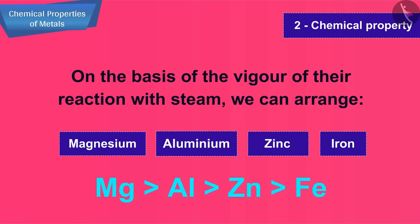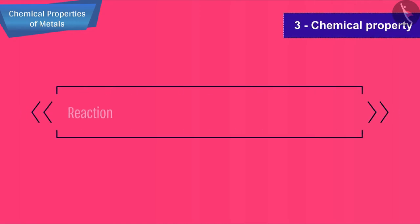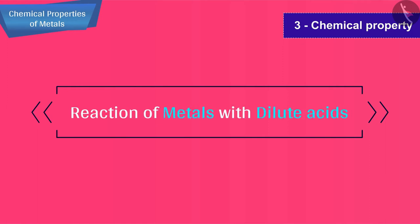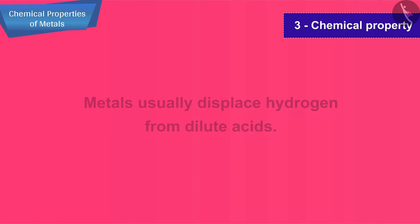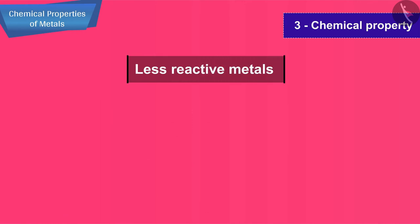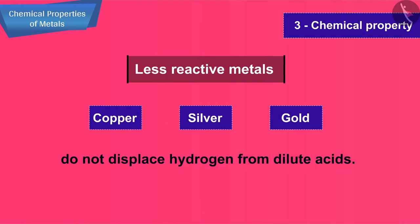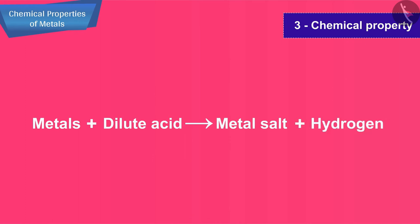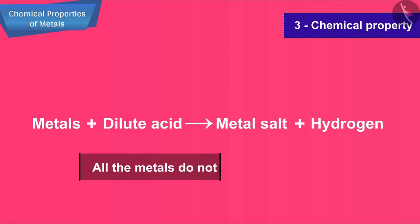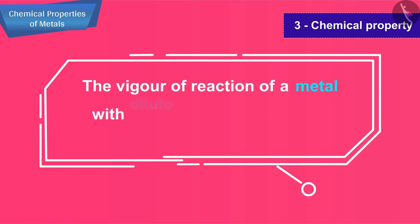On the basis of the vigor of their reaction with steam, we can arrange magnesium, aluminium, zinc, and iron in decreasing order of their reactivity. The next property is the reaction of metals with dilute acids. Metals usually displace hydrogen from dilute acids. Less reactive metals like copper, silver, and gold do not displace hydrogen from dilute acids.